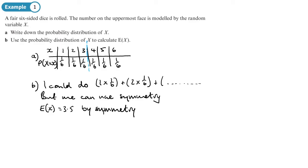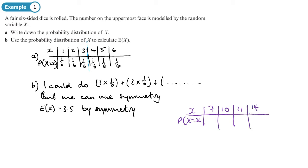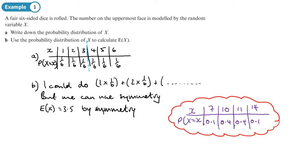Here's another example to show how symmetry works. Let's say the outcomes are 7, 10, 11, and 14 with probabilities 0.1, 0.4, 0.4, and 0.1. This looks different from the previous one but it is still symmetrical — the probabilities are symmetrical, and the values are symmetrical with equal gaps either side of the middle. By symmetry, E(X) for this one would be 10.5.